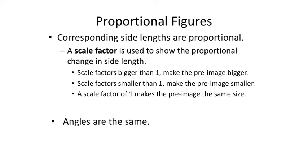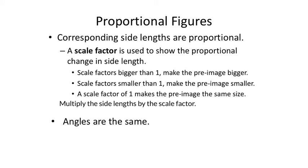Proportional figures mean that the side lengths of all the sides of the shape are proportional. Today we're going to be applying what we call scale factors. We can apply scale factors to each of the side lengths in order to change the size of the shape. When I say we're applying these scale factors, that means we're multiplying. We're multiplying it by the side lengths of the shape in order to get the new side lengths, whether they've been made bigger or smaller.